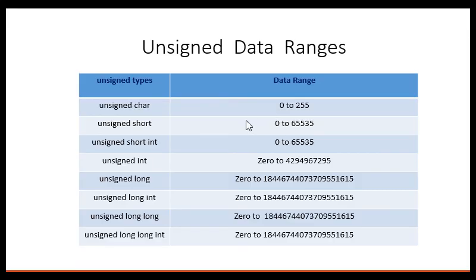If we go back to our PowerPoint, unsigned char data range is 0 to 255. Unsigned short is 0 to 65K. Why 65K?